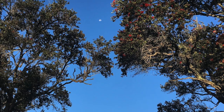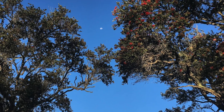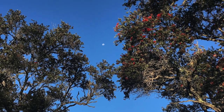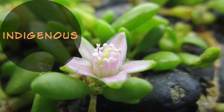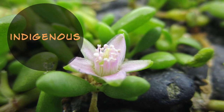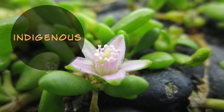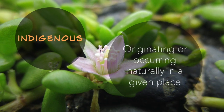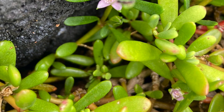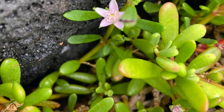A well-known example of an endemic species is ʻōhiʻa. An indigenous species are those that originated or occur naturally in a given place. In other words, it arrived in Hawaii by the three Ws, but it's also found in other places in the world. Many of our coastal species are indigenous, such as akulikuli.